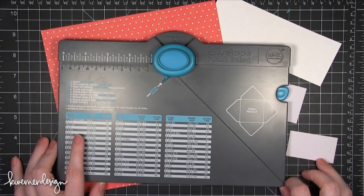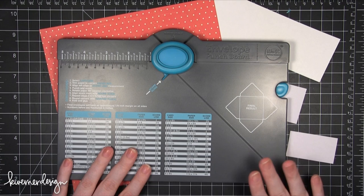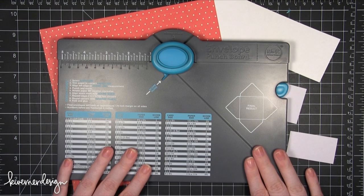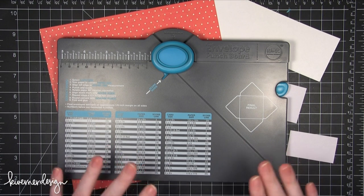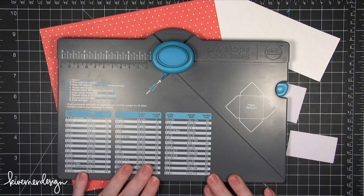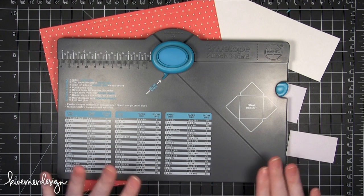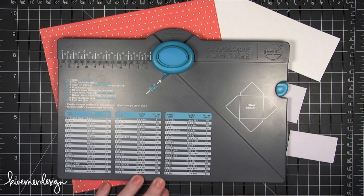For this very first video I thought it would be beneficial to show you the We Are Memory Keepers envelope punch board. You can make your own envelopes using this punch board. This is my most favorite solution for making an envelope. I've said in the past I just don't make envelopes. I just don't want to deal with it, which is true.